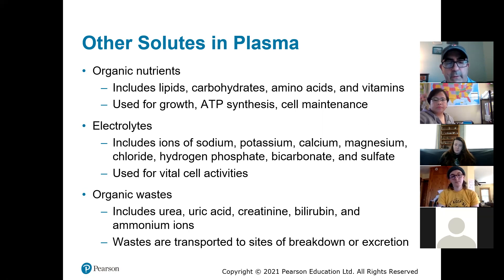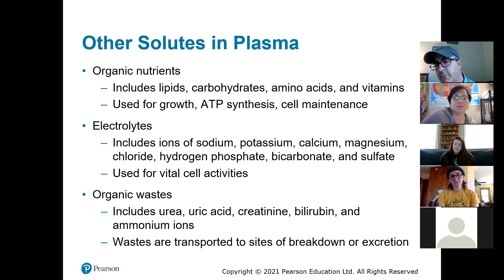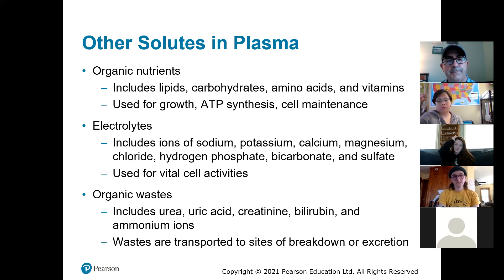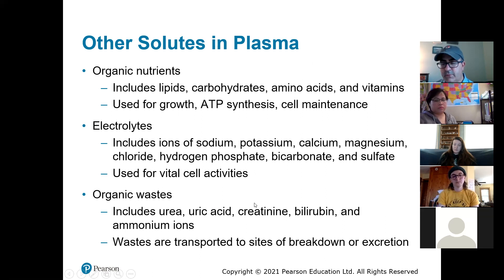And then there are organic wastes like urea, uric acid, creatinine, bilirubin, and ammonium ions. They are transported to sites of breakdown or excretion — the blood transports them to the liver where they get broken down, or to the kidneys where they can be transferred into the bladder and excreted. Those organic wastes basically come from eating certain foods; when you eat something made of protein, for example, you break it down and some of it becomes the waste product of urea or creatinine.